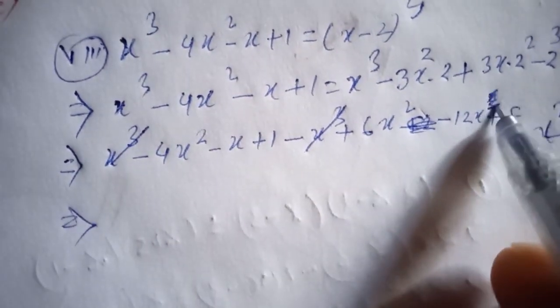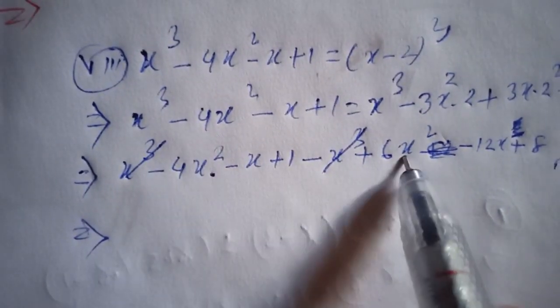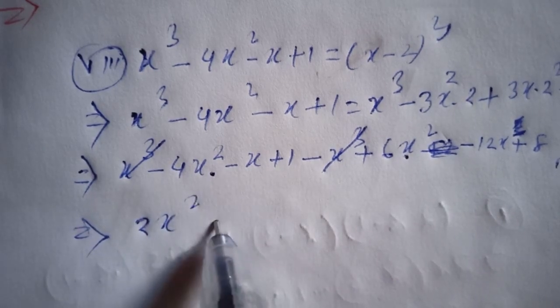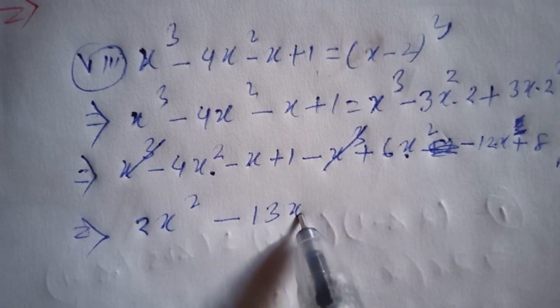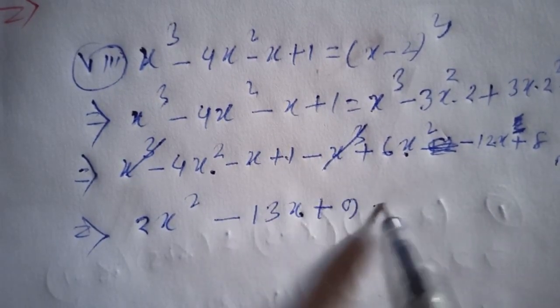Simplifying the x squared terms: minus 4 minus 12 gives minus 16. For the x terms, we get minus 13x. The constant is plus 9. This equals 0.